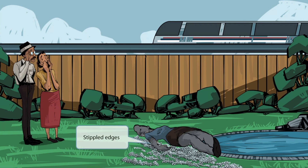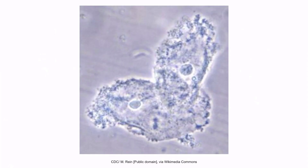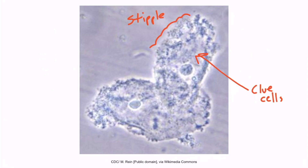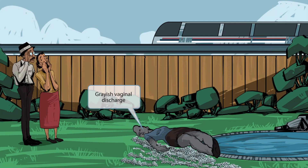Now Clue cells have stippled edges. The body of this poor victim has been decaying, and as it decays, her skin has been wasting away and getting a rough stippled appearance. So the rough skin on the decaying body represents stippled edges on Clue cells. This is a histological specimen showing Clue cells, and you can see the stippled edges around these cells.